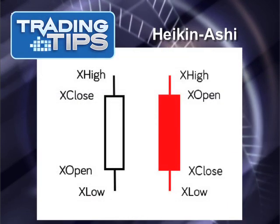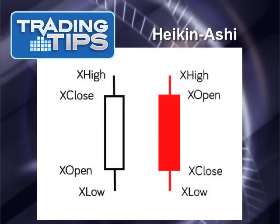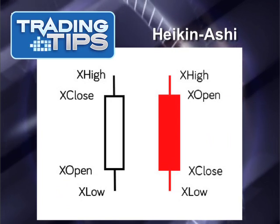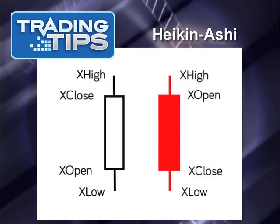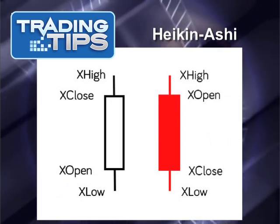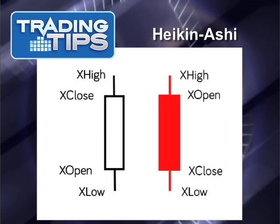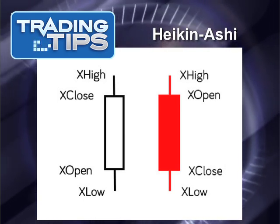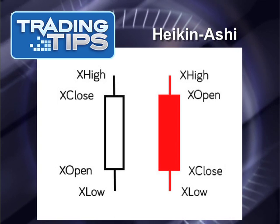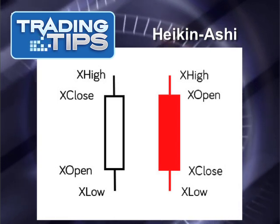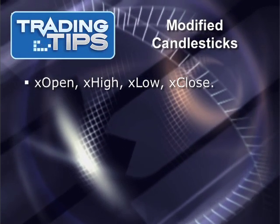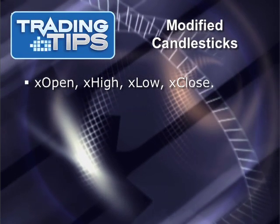On the surface, Heikin-Ashi candlesticks look just like regular candlesticks. Each candlestick represents four prices within a given period: the open, the high, the low, and the close. In cases where the close is higher than the open, the bars are black and white. In cases where the close is lower than the open, the bars are red. Hollow bars represent up days; filled bars represent down days.